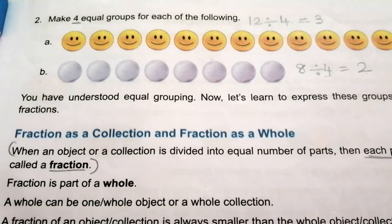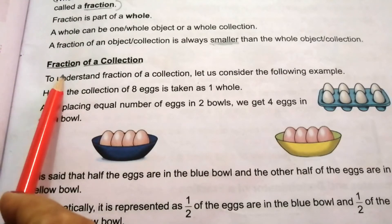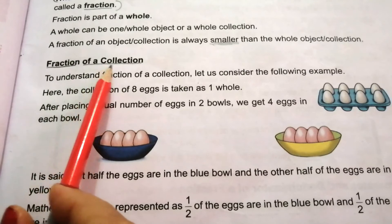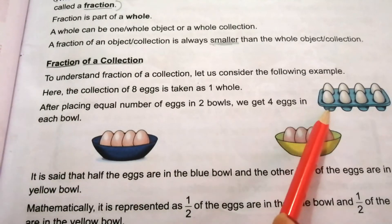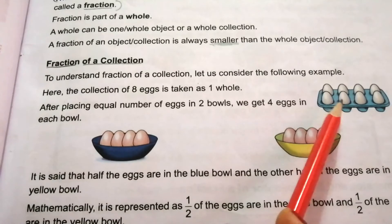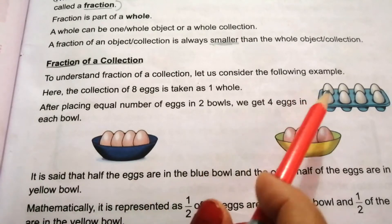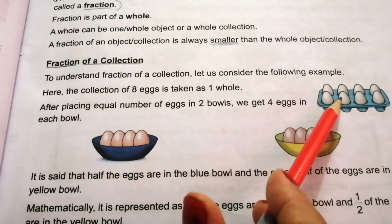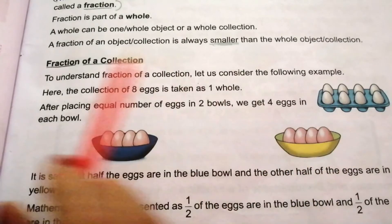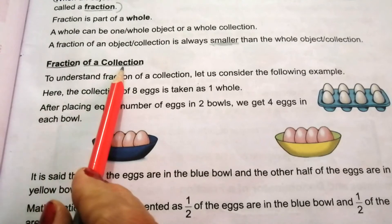This is the concept of equal grouping. The next topic is fraction of a collection. Here we have 8 eggs — more than 1 egg, meaning a collection of eggs. That is why we call it fraction of a collection.